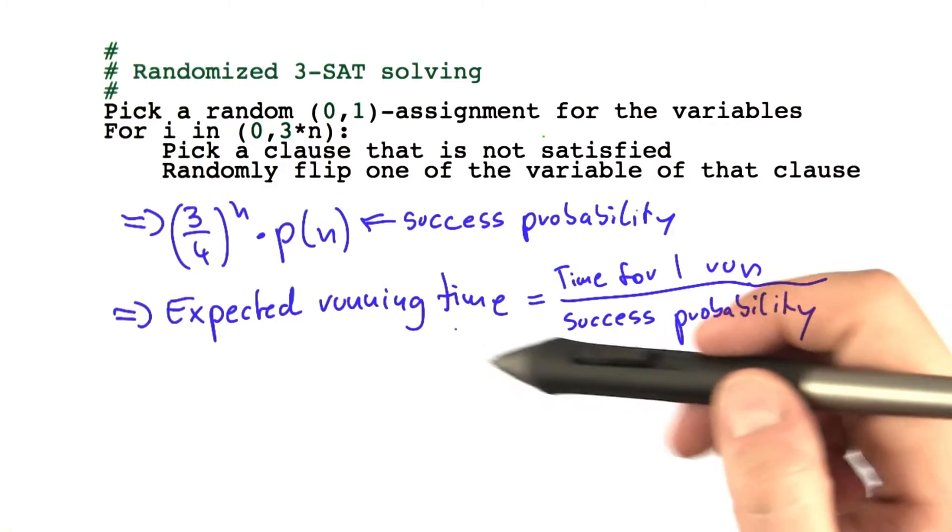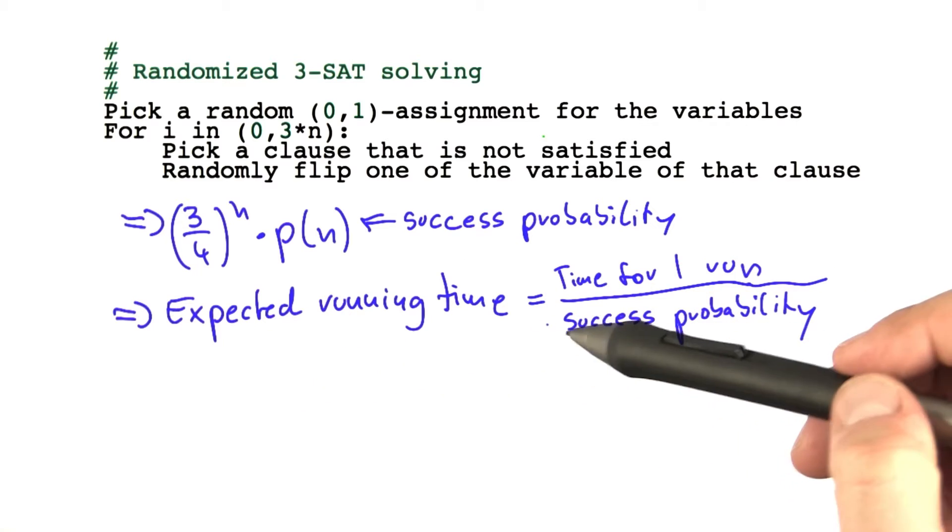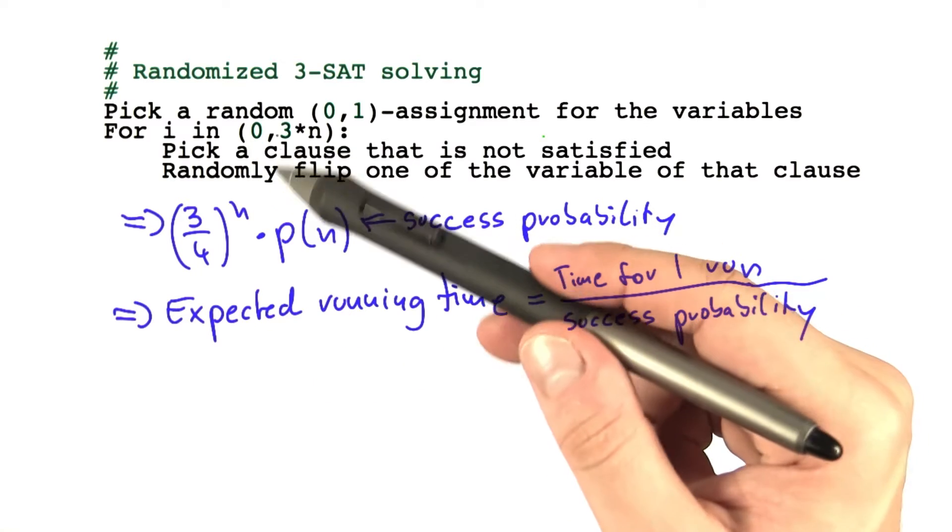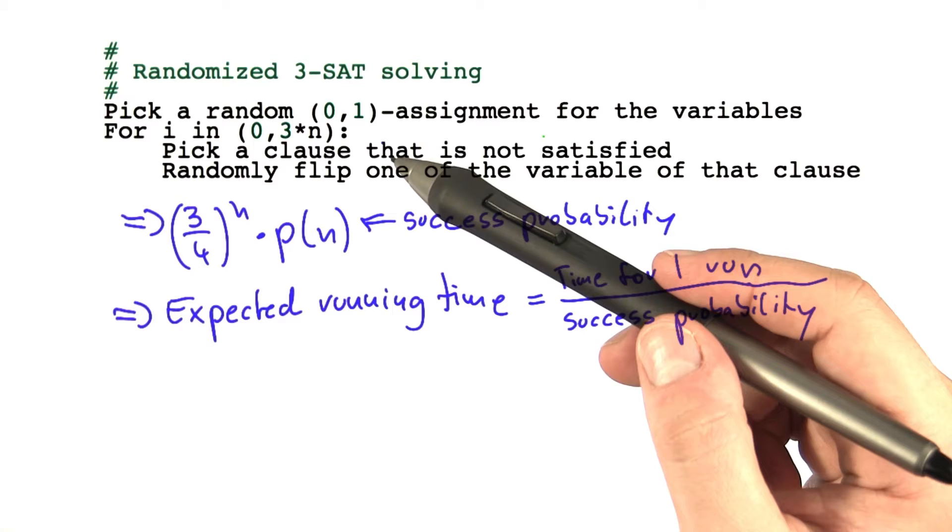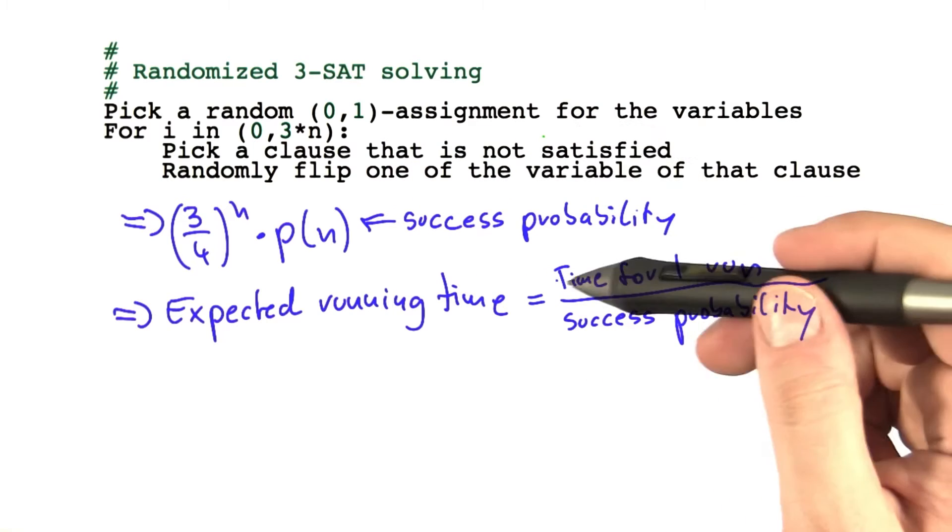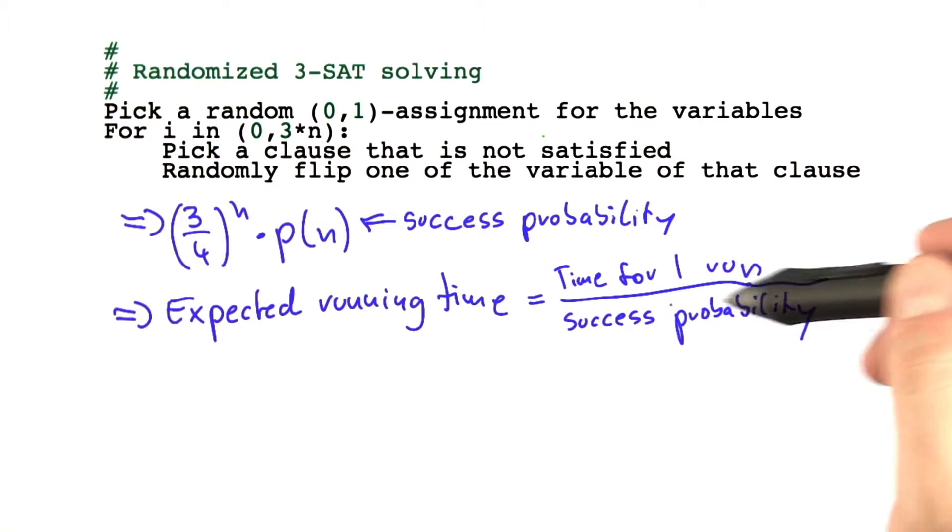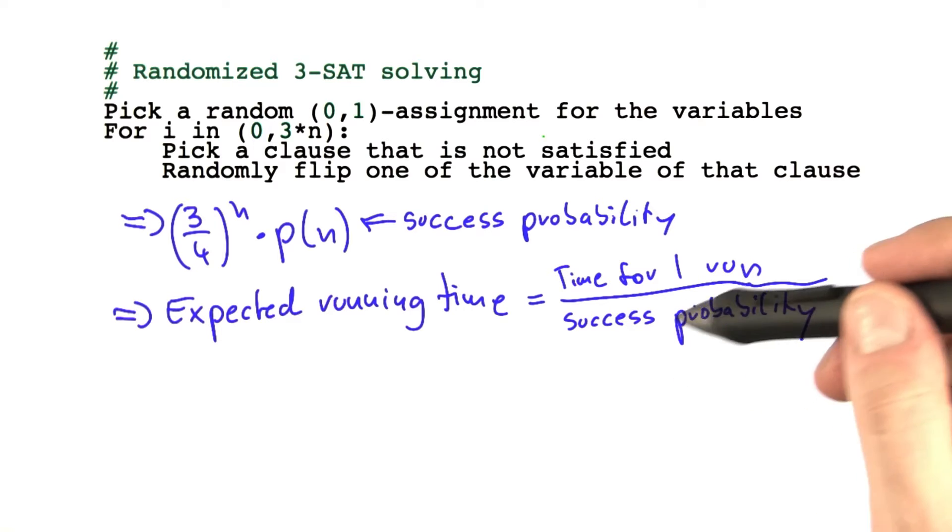If you've had a basic statistics course, you should already know that the expected running time—how often we have to run this algorithm until we find a satisfying assignment, assuming the Boolean formula has one—is the time for a single run divided by the success probability of one run.